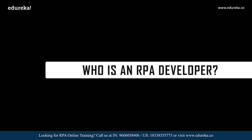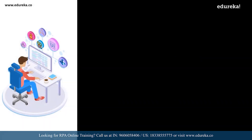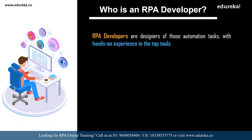This task could either be a simple task or a complex task. All business processes from simple to complex can be automated using an RPA tool. RPA developers are those designers who design these automation tasks with hands-on experience in the top tools present in the market. The three main tools that are very popular today are UI Path, Blue Prism, and Automation Anywhere. You as an RPA developer can explore any of these tools and get hands-on experience.